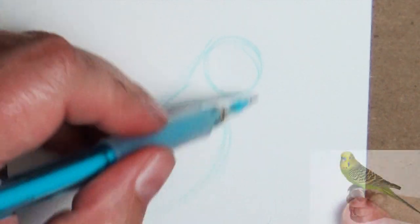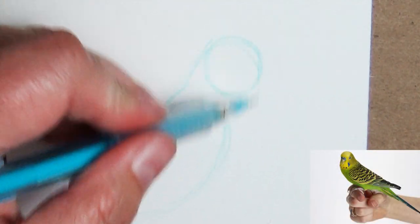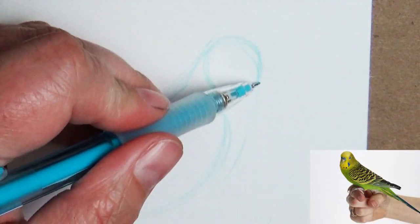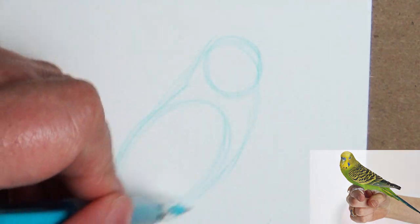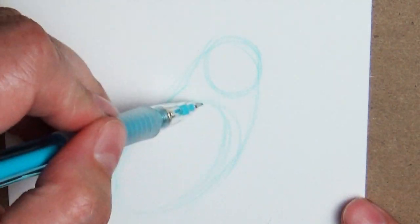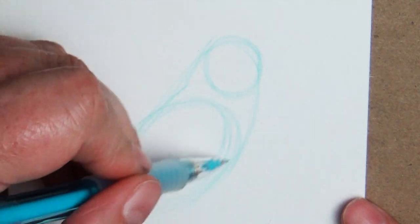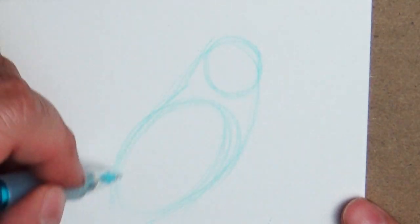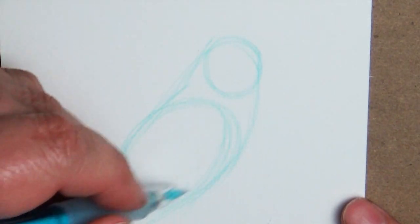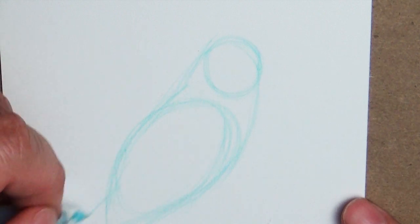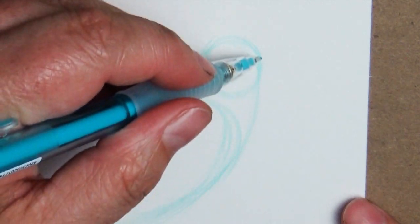It's really important to have some good reference photos if you haven't drawn a lot of parrots or parakeets before, just to make sure everything is in the right proportion. Once we have that, we're going to connect those shapes together with a line that goes around the contour of the bird, so it just kind of wraps around it.